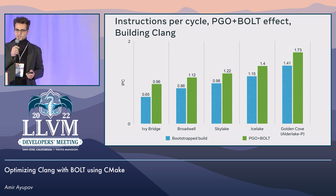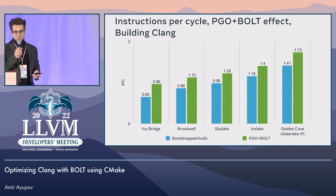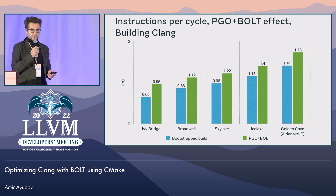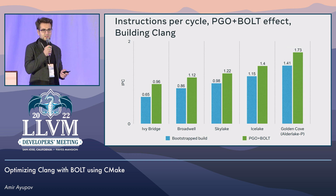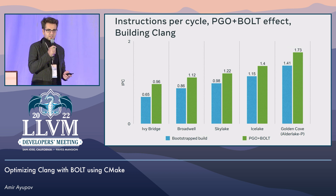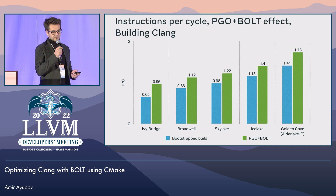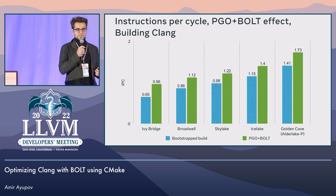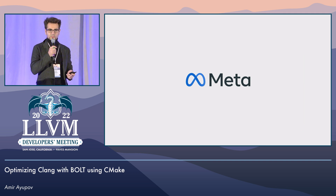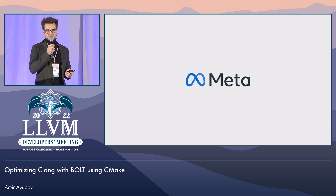To reiterate: on this workload of building Clang, Bolt is as effective as PGO, and both can be enabled with simple CMake configuration. That's all I have. Thank you for your interest, and I hope you will give Bolt-optimized Clang a try in your next build.